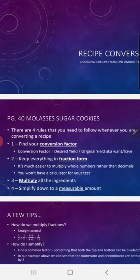Number three: multiply all of your ingredients. When you convert a recipe, make sure you do all of the ingredients — if you forget one, your recipe will be off. Number four: simplify down to a measurable amount, meaning if you get one-eighth of a cup, tell me what that equals because we don't have an eighth-cup measuring tool.